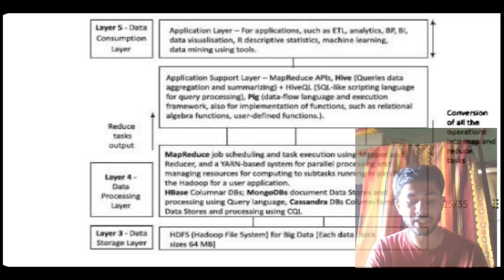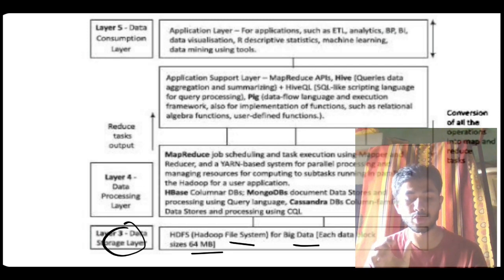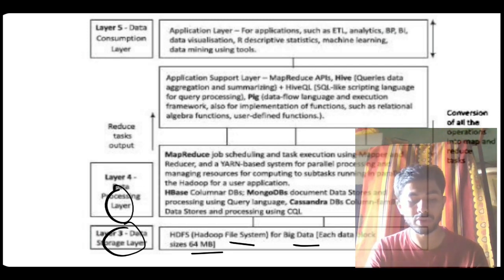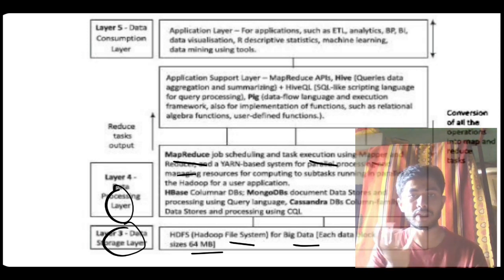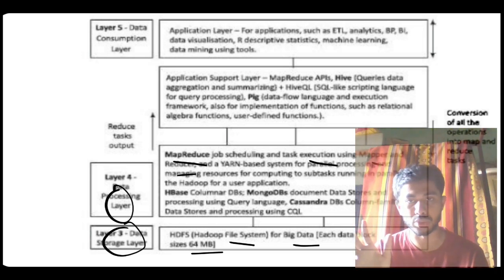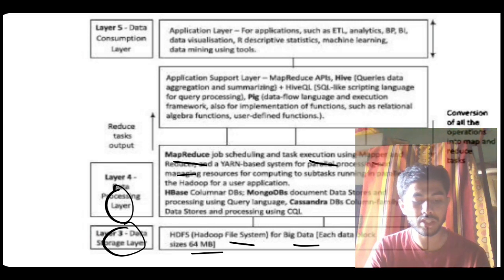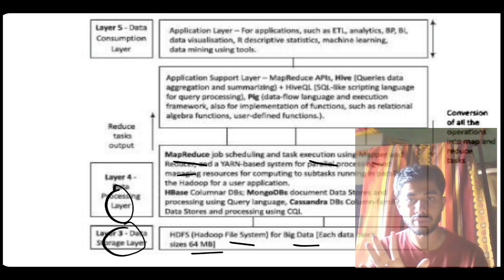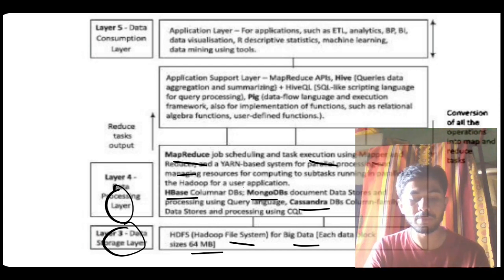The data storage layer is present here — HDFS file system for big data. From the data storage you will use it to process the data. From Layer 3 to Layer 4 you will be doing MapReduce job execution: mapper and reducer. In the data processing layer, you have some data and you use it to make it of better use. After processing, using HBase, MongoDB, and Cassandra DB for storing and panel processing, you send it to the data consumption layer.